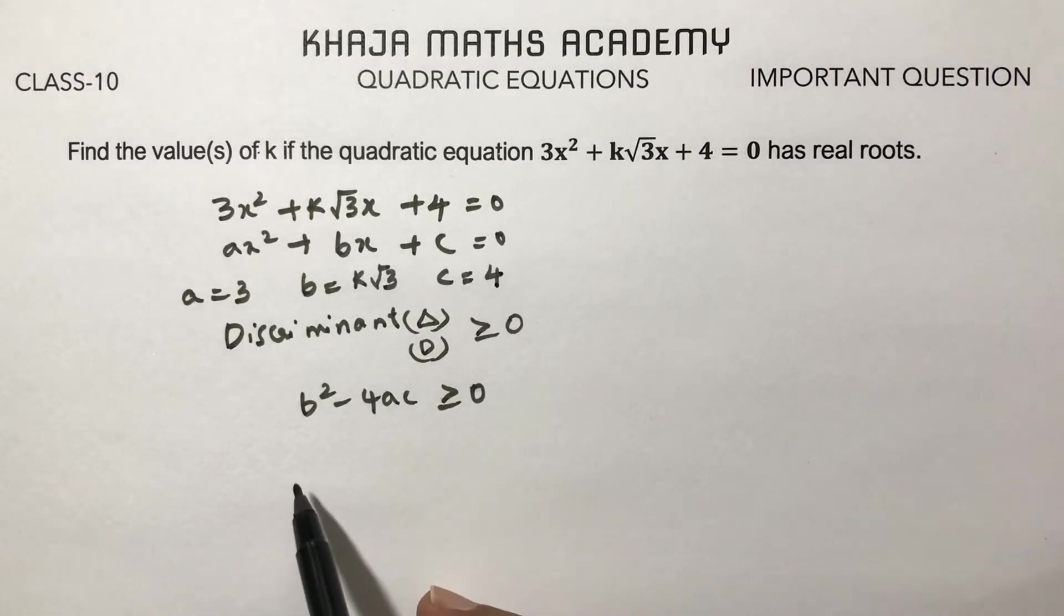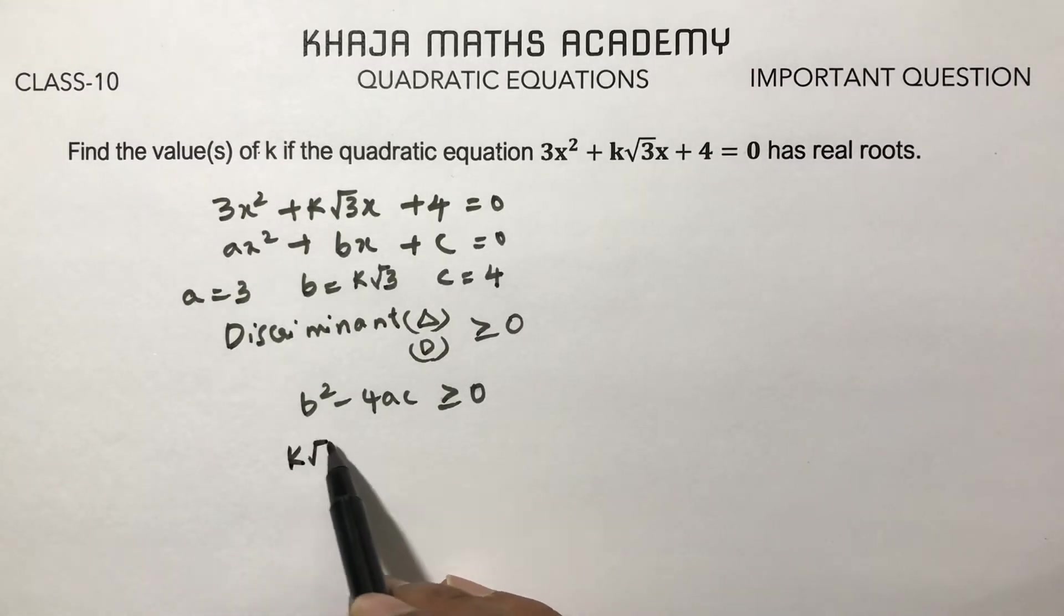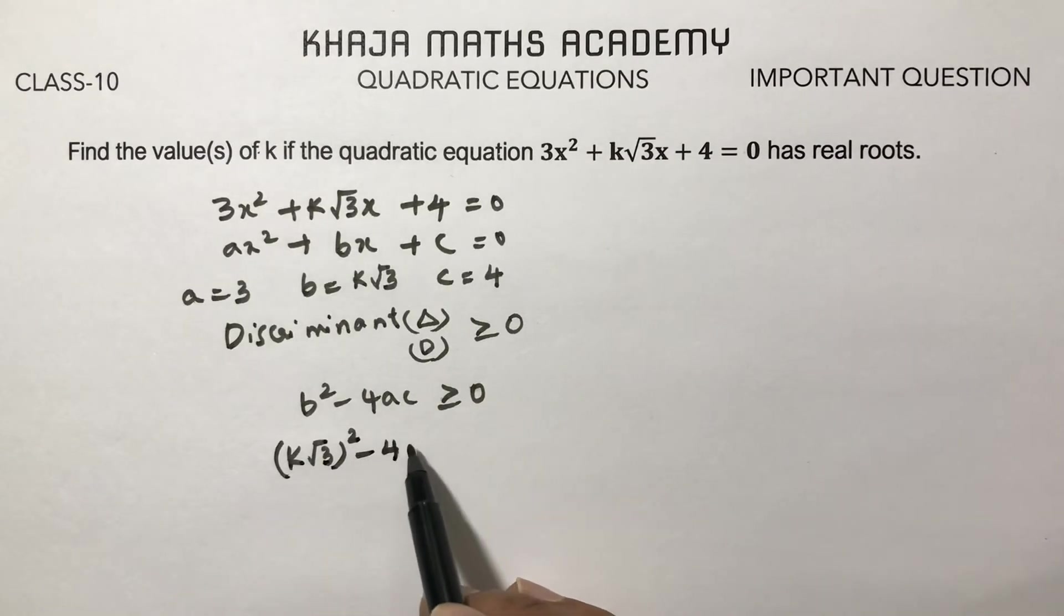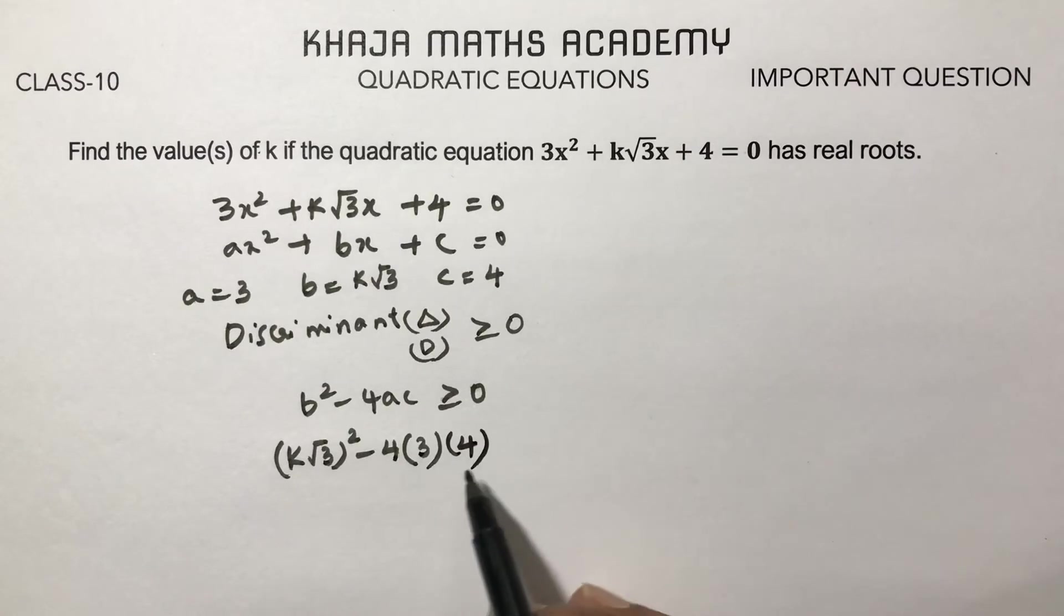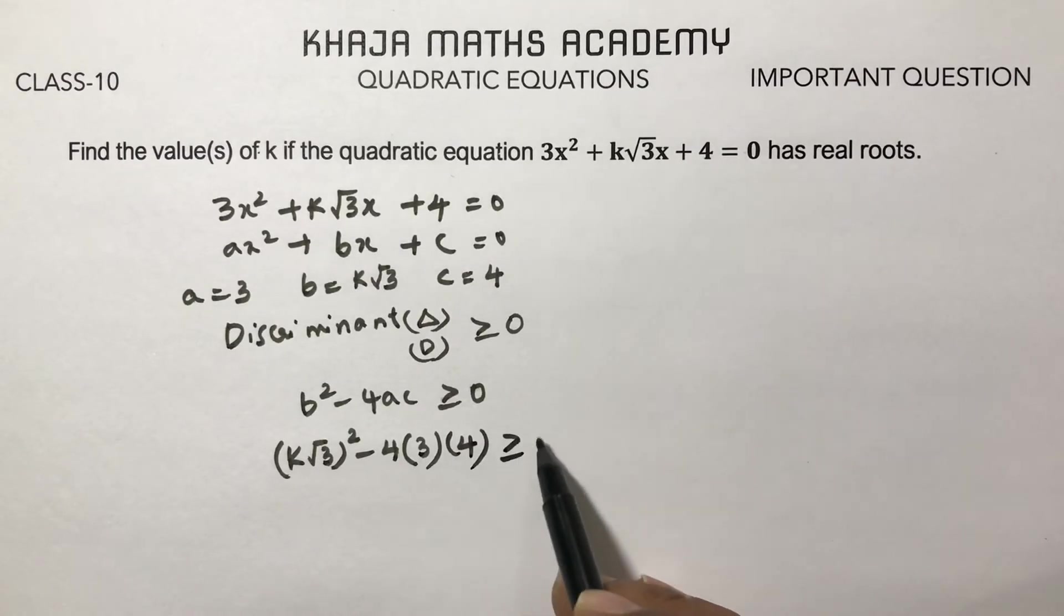Now substitute the values: (k√3)² - 4(3)(4) ≥ 0.